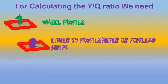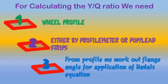We need a profilometer, or pop gauge, or lead strips to take the wheel profile. From that profile we work out the flange angle for application of Nadal's equation, which is a very simple and most practical way — I have tried to explain it.